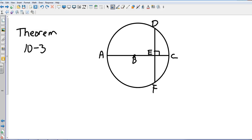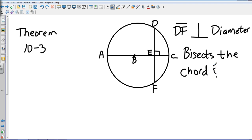Okay, now we have theorem 10-3. Notice we have a circle with a diameter of AC. Go ahead and hit pause and take a second to draw that. This theorem says that if a chord—in this case, DF is our chord—if DF is perpendicular to the diameter, then it bisects the chord and its arc.